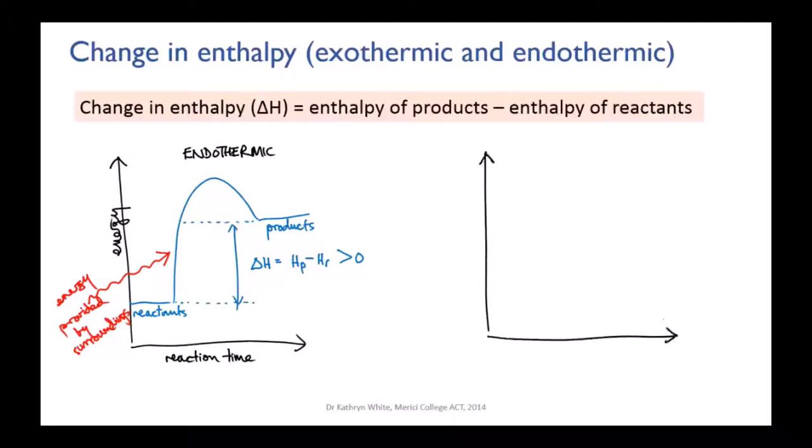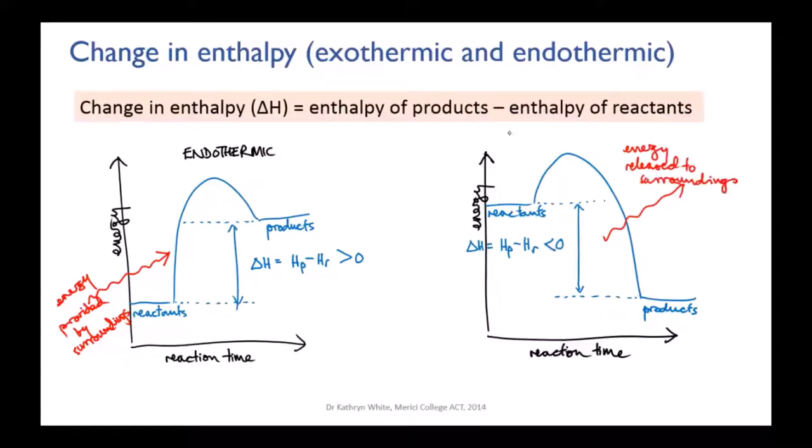If the change in enthalpy is negative, it means that the reactants must have contained more energy than the products, and that means that energy must have been released into the surroundings during the reaction as the reactants are turned into the products. This will cause the surroundings to heat up. We call this kind of reaction exothermic.